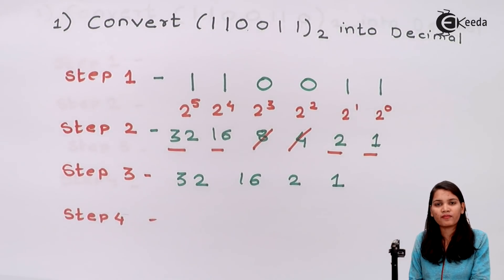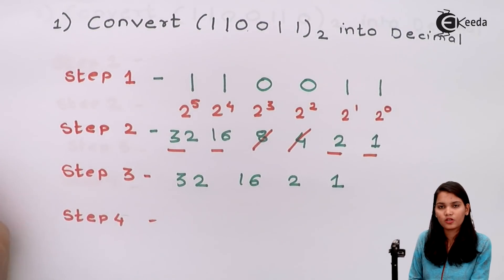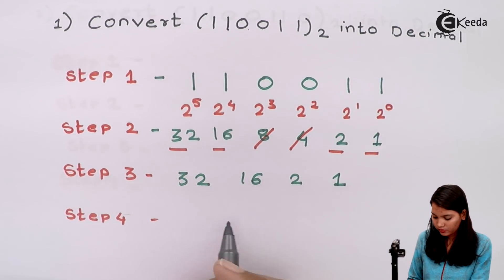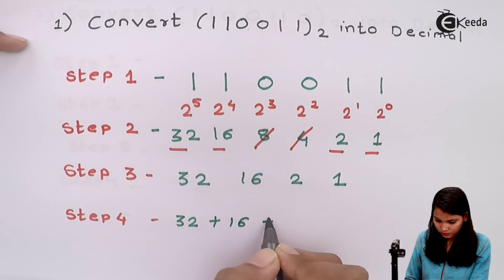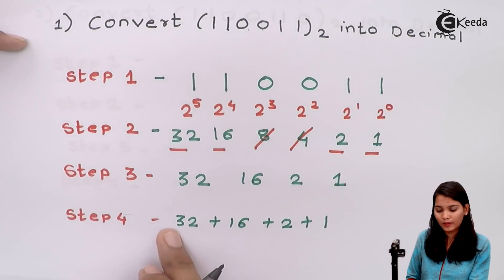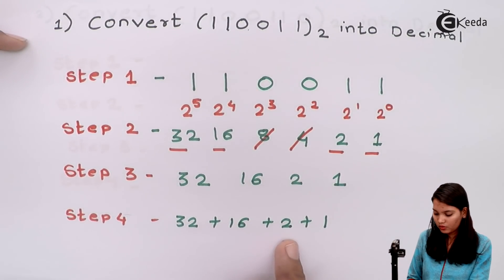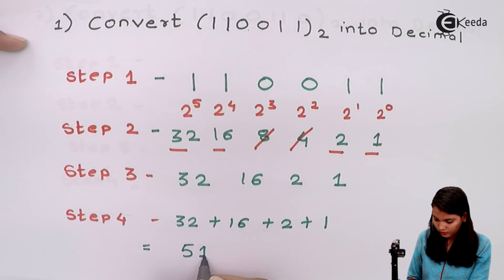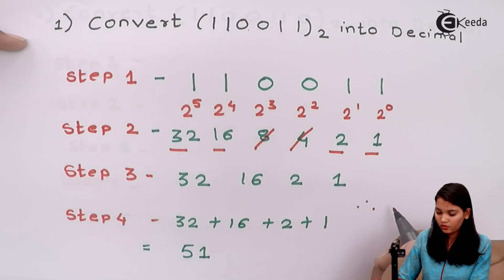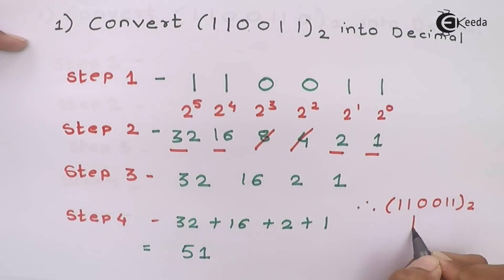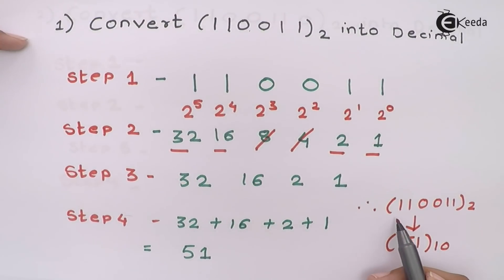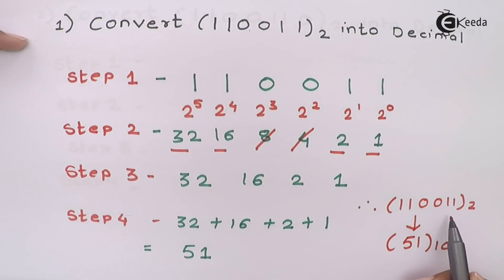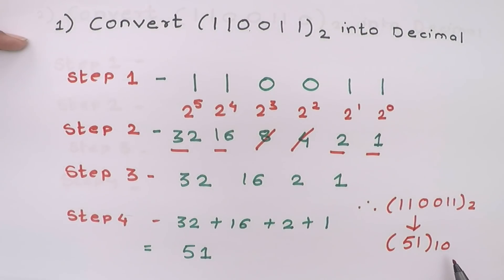The final step is to add the remaining weightages. So 32 plus 16 plus 2 plus 1 gives 51. Therefore, 1 1 0 0 1 1 in binary gives 51 in decimal.